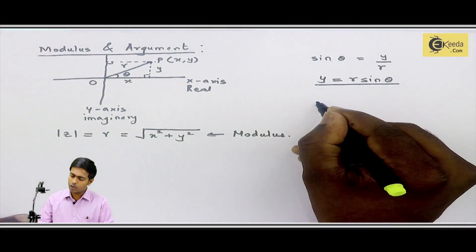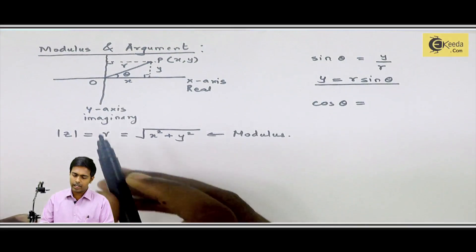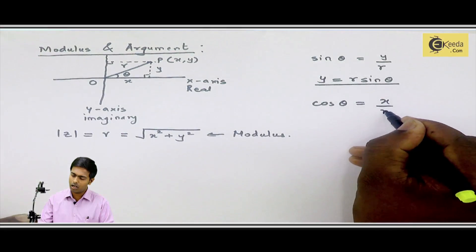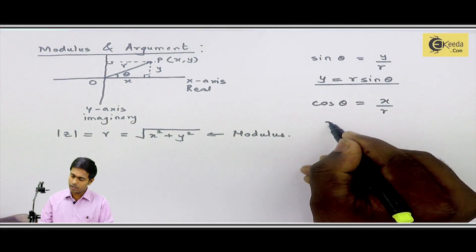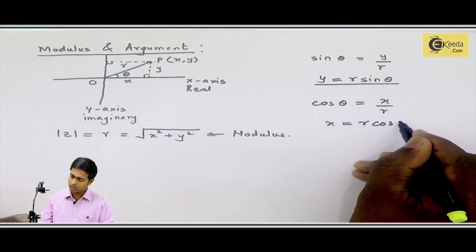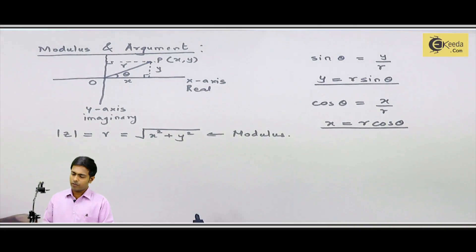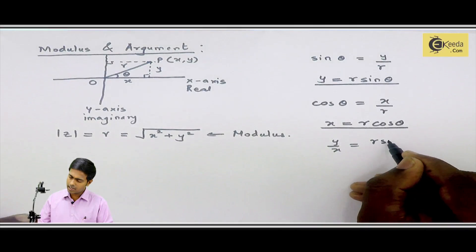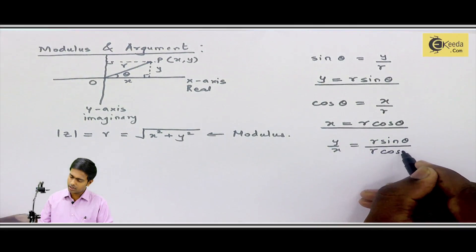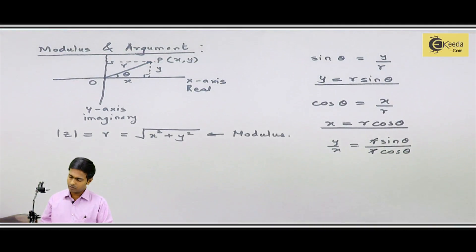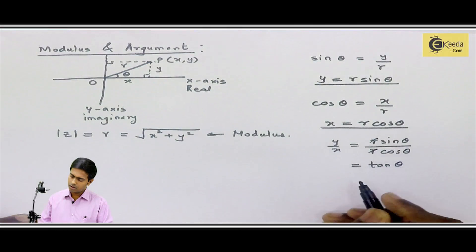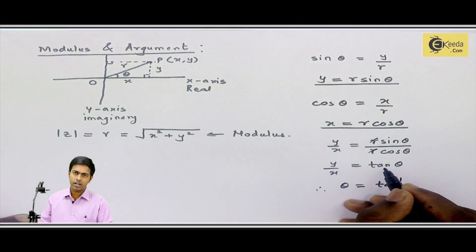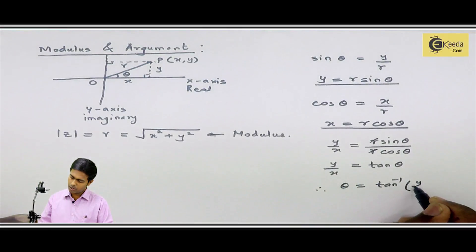Similarly, cosine theta is the adjacent side upon the hypotenuse — that is x upon R. So we get the relation x = R cos theta. If we divide these two ratios, we get y/x = R sin theta / R cos theta. R and R cancel out, and we get tan theta = y/x. Therefore, theta = tan inverse of y/x.